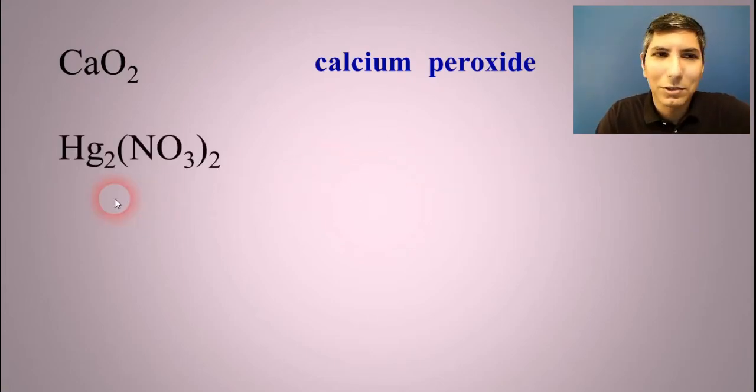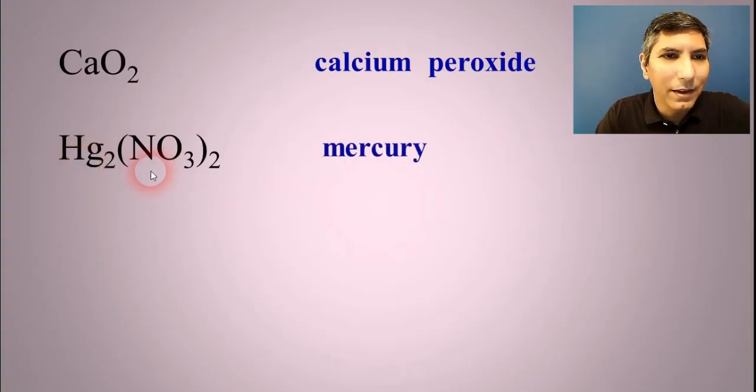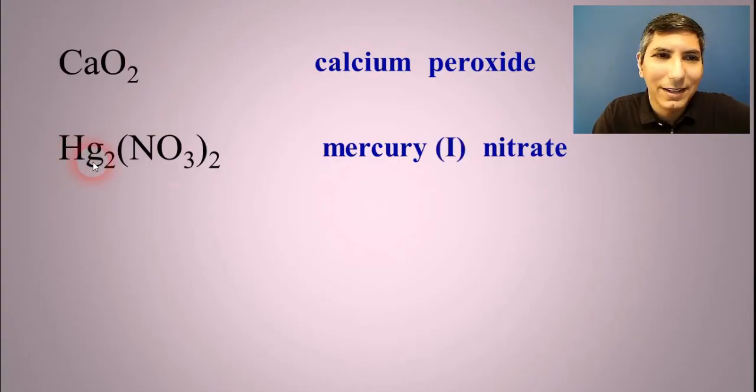How about this one? Here's another challenge question. Hg, of course, is mercury and NO3 is nitrate. But what about the charge on here? Well, this is mercury(I) nitrate because mercury(I) is a polyatomic ion with the formula Hg2 with a total charge of plus two.